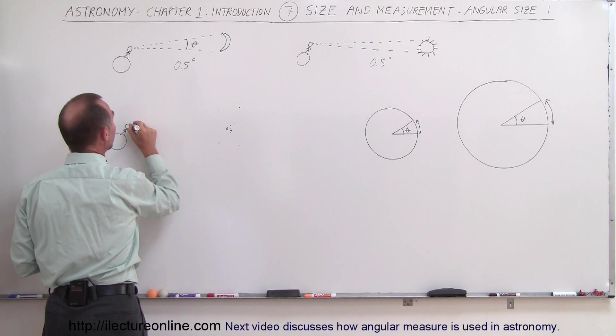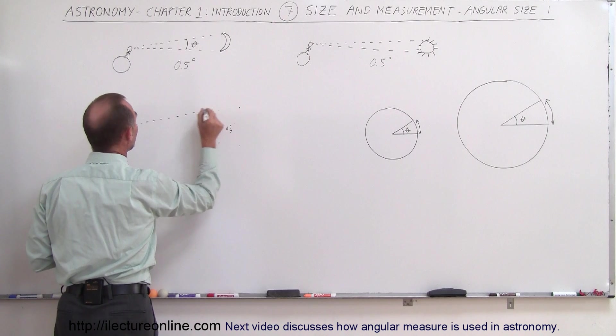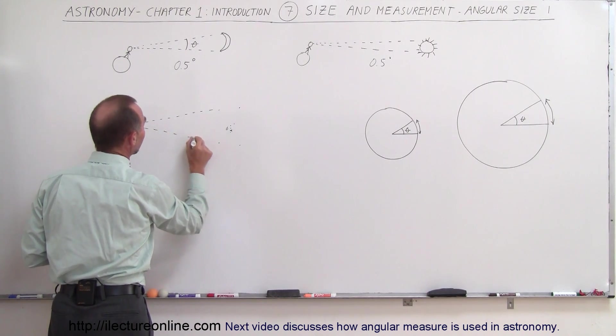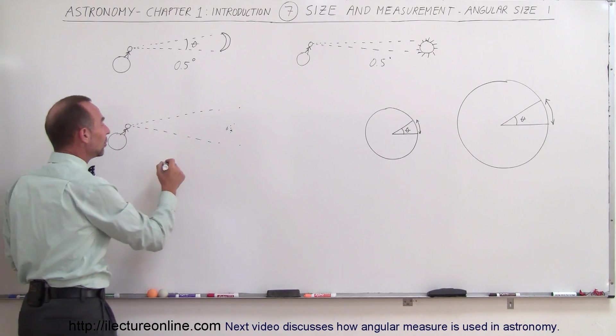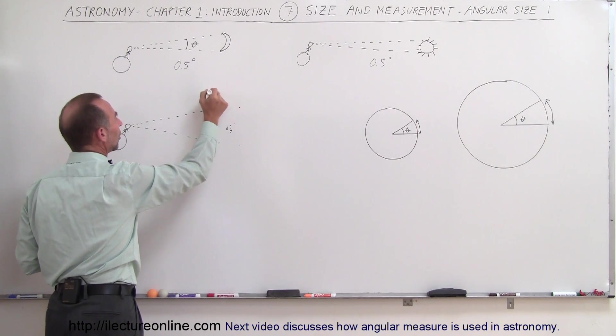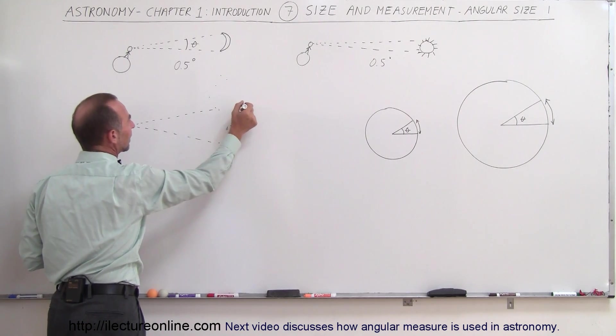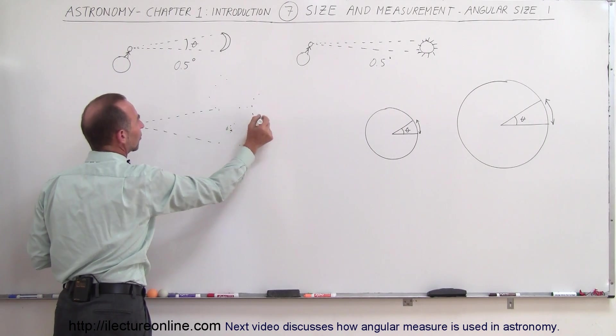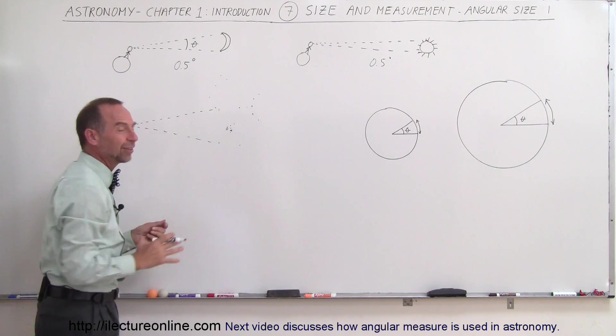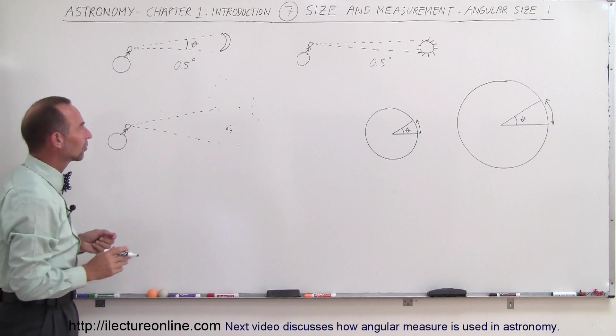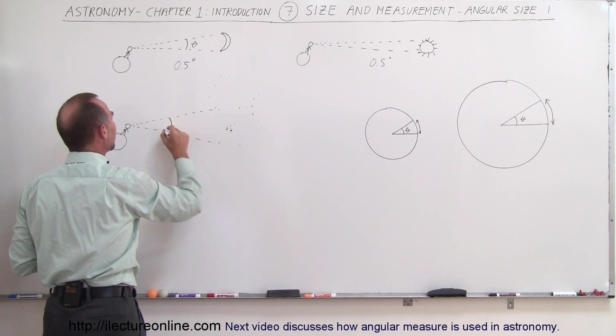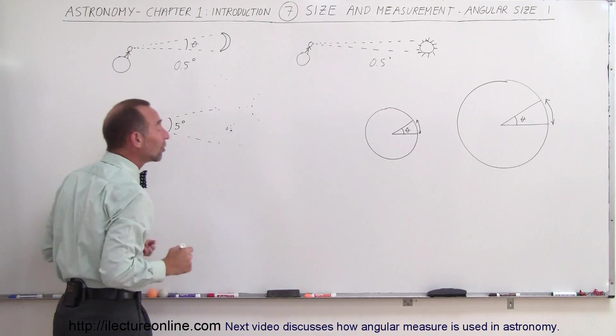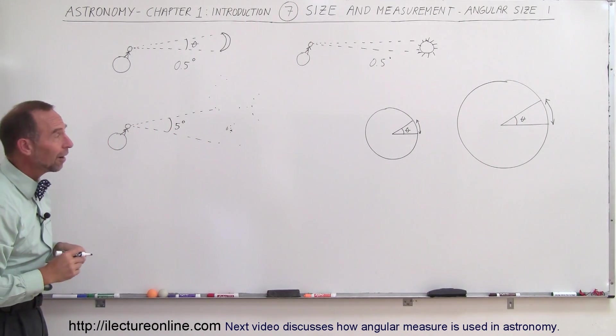What you can do is draw lines like this and like that, and you see that this would be roughly an angular size of about five degrees. If we take the whole constellation, Orion is a little bit bigger if you take all the stars into account. But if you just take this part that most everybody recognizes, that makes an angular size of about five degrees.